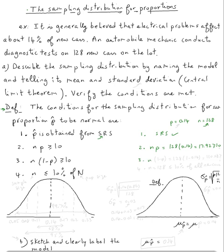Number three, we need to check that n times 1 minus p, which is, in our case, 128 times 1 minus 0.14. Use a calculator. Supposed to get 110.08 bigger or equal than 10. So checked, checked.